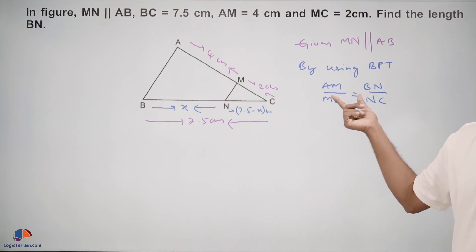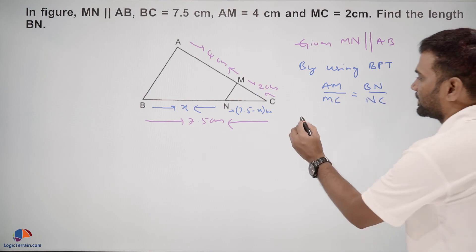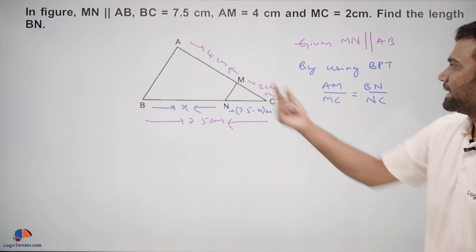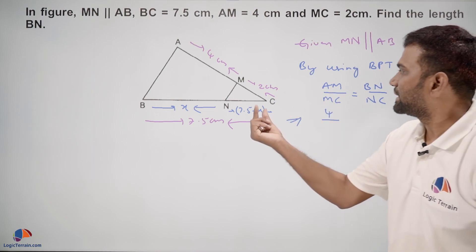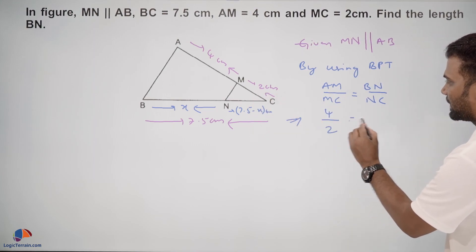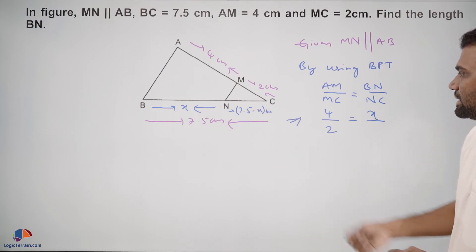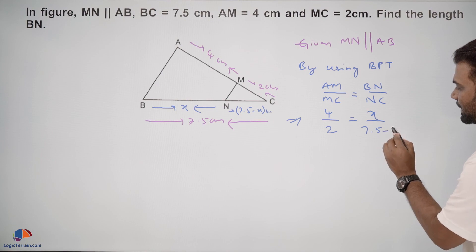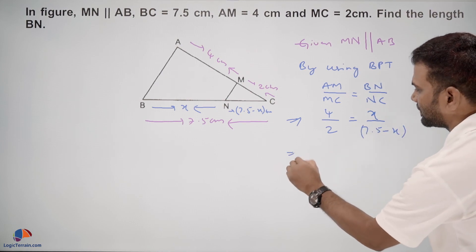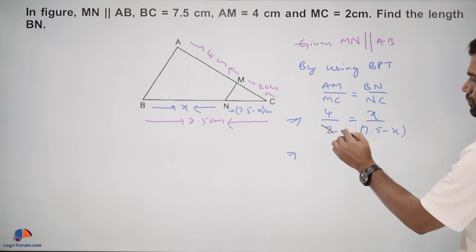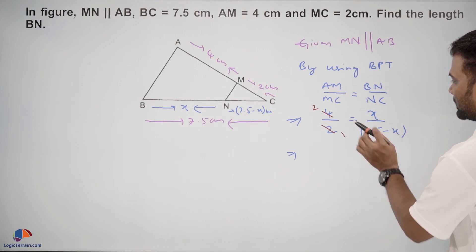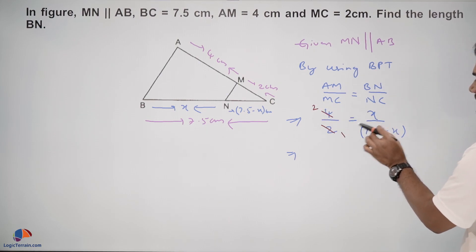Here we have AM is 4, MC is 2, BN is X, and NC is 7.5 minus X. Dividing both numerator and denominator by 2, we have 2 equals X upon 7.5 minus X.